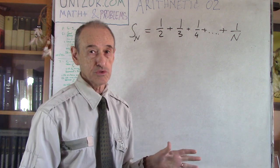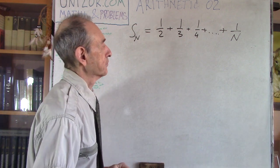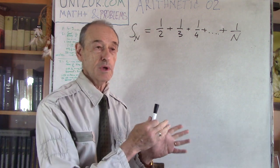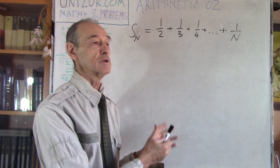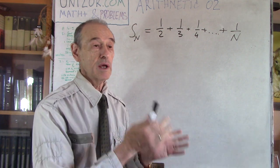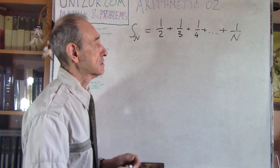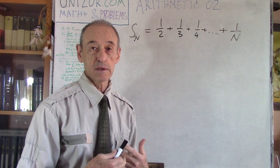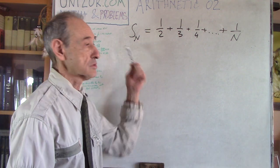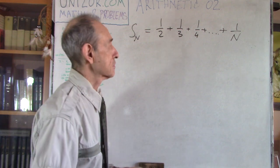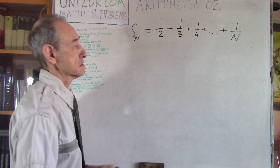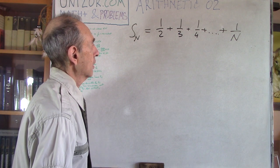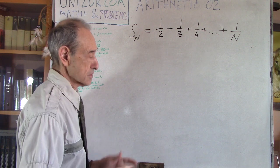I will suggest two solutions. First, you should pause the video — if you found this on YouTube or wherever — and think about this problem yourself, then continue listening to my solutions. You might come up with your own, and I will gladly put it on unizor.com with your authorship. Just send it to me as a solution; you have my email on every screen. So here is my first solution.